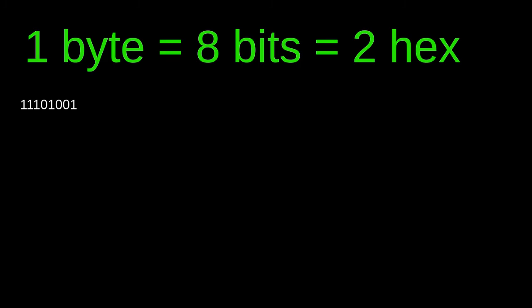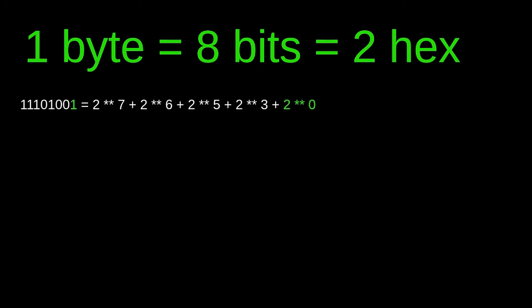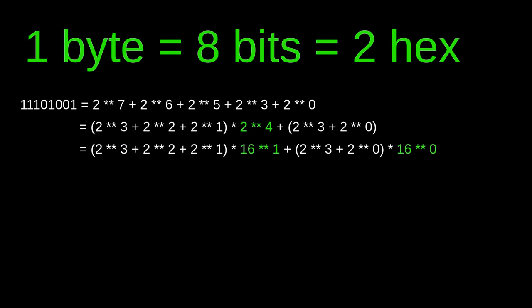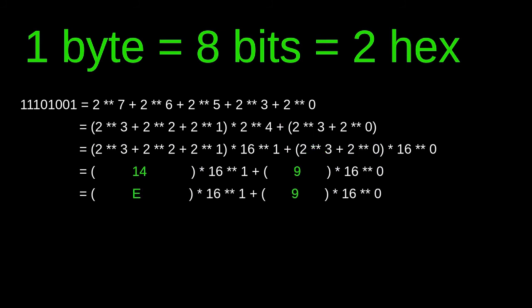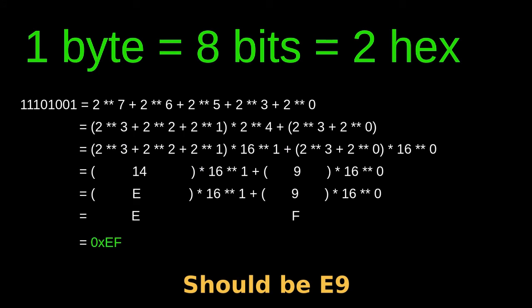Let's see how to convert a binary byte into a hexadecimal value. The 7th, 6th, 5th, 3rd, and 0th positions are 1, so we add 2 to the power of 7, 6, 5, 3, and 0 respectively. Anything in a position greater than or equal to 4, we can factor out 2 raised to the power of 4, and rewrite in base 16 — 2 to the power of 4 equals 16 to the power of 1. We evaluate the expressions inside the parentheses, giving us 14 and 9. In hexadecimal notation 14 is e and 9 is 9, so we get 0xef. That was an example showing that a sequence of 1 byte can be represented in 2 hexadecimal characters.